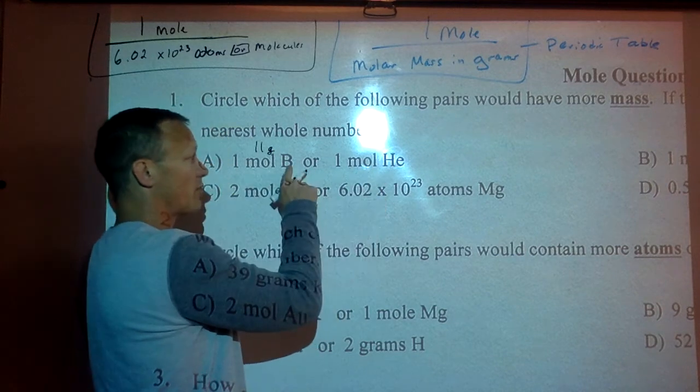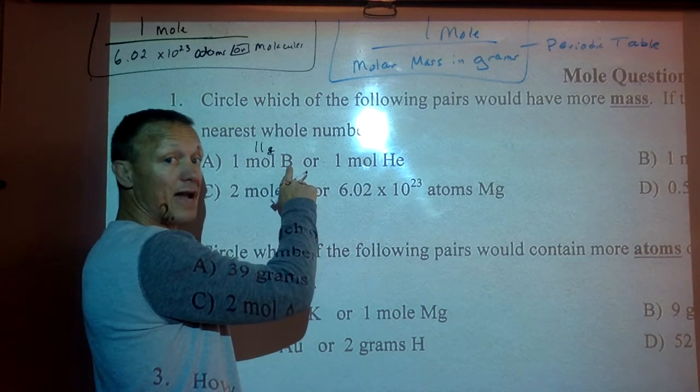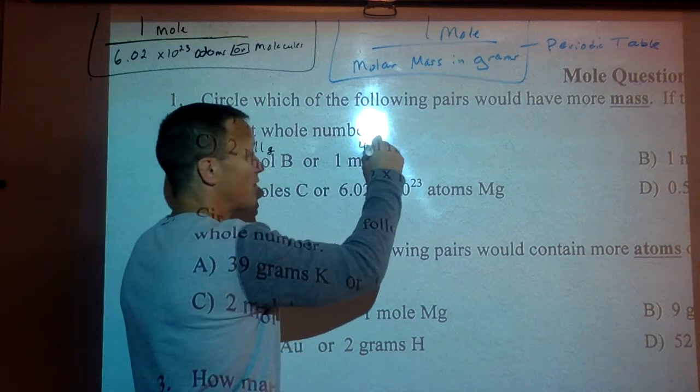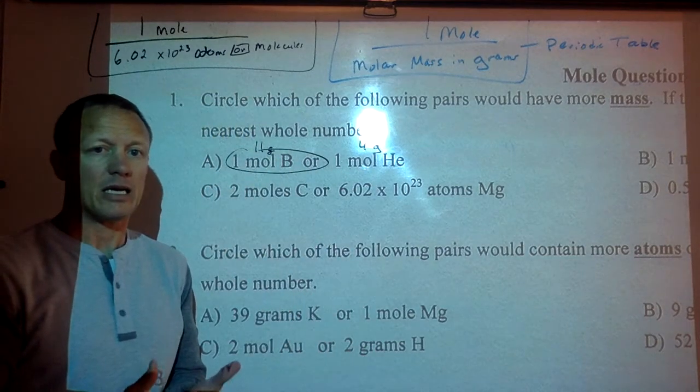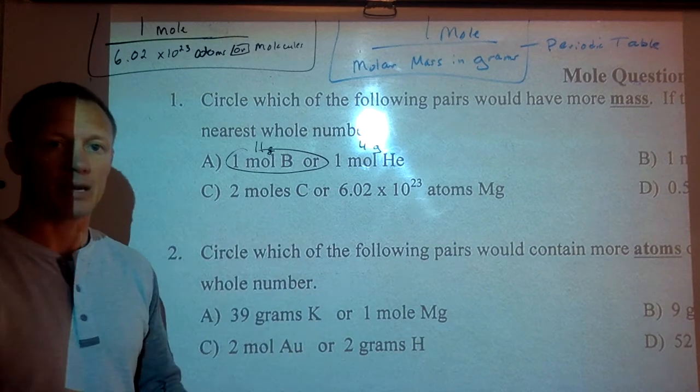A mole of helium, same number of particles, same number of atoms, would only have a mass of 4 grams. So this has more mass to it, because each boron is a bigger atom than helium. It's got more protons and neutrons.